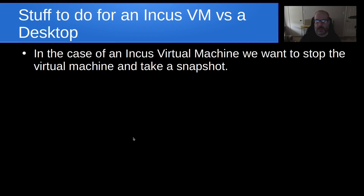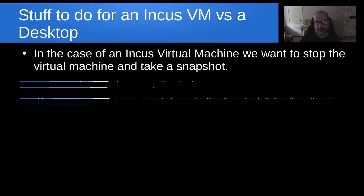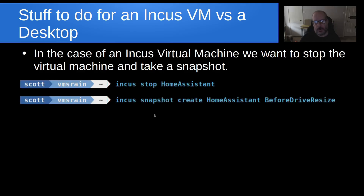In the case of an Incus Virtual Machine, we want to stop the virtual machine and also take a snapshot for safety in case we mess up. And in the case of a physical machine, you're going to be moving to another hard drive, so you're going to have a copy that you're working with anyway. I did an Incus Stop Home Assistant, and then I did an Incus Snapshot Create for that Home Assistant container, and I called my snapshot 'before drive resize'.